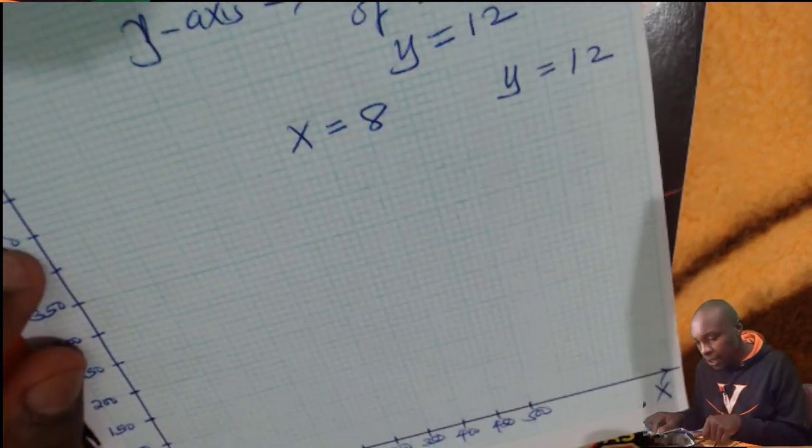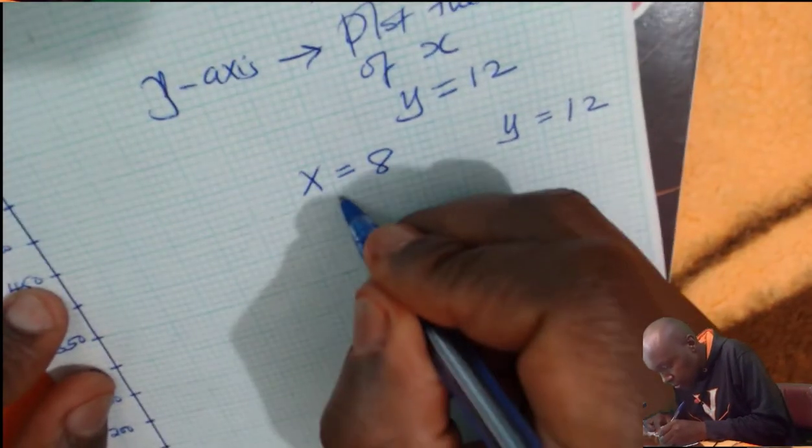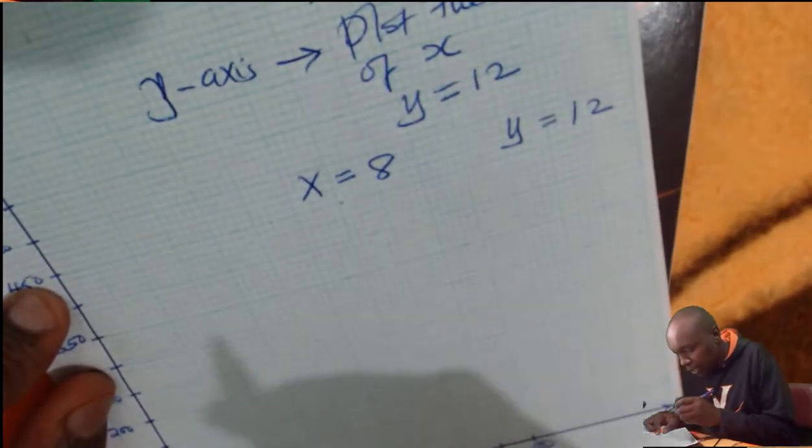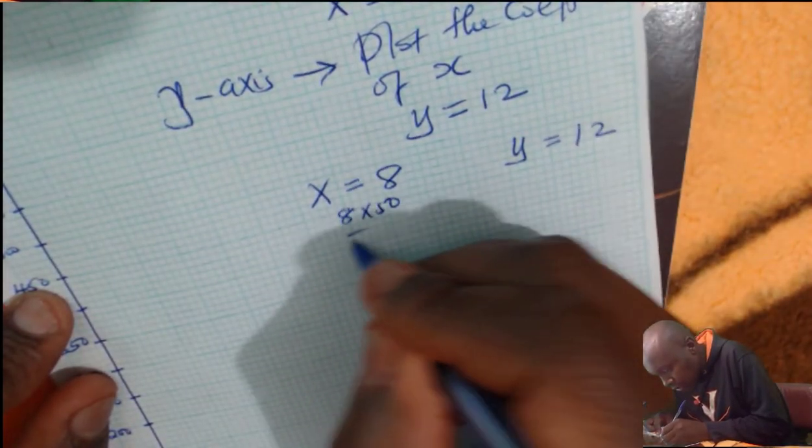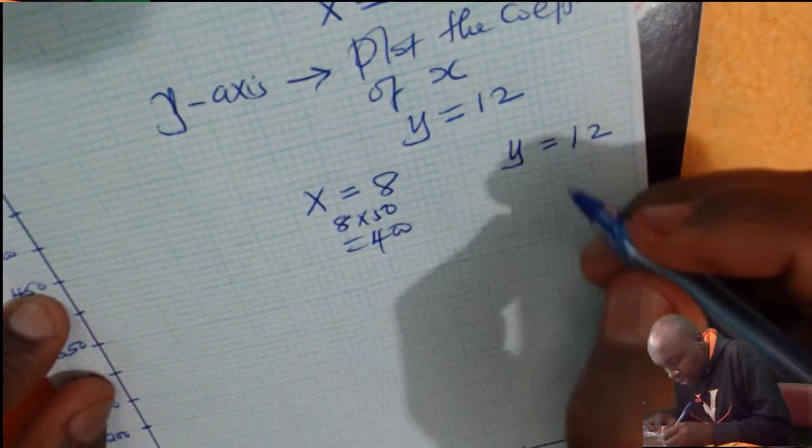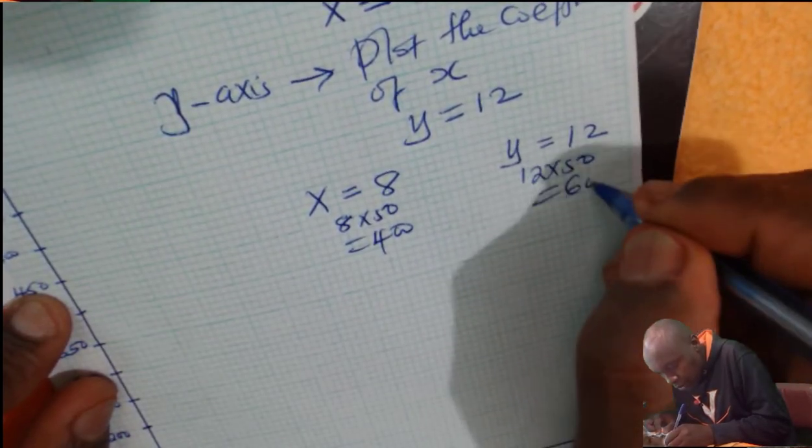you multiply both the x coordinates. So here, you're going to multiply by 50. You multiply 8 multiply by 50. So 8 multiply by 50, this will give 400. Then y multiply by 50, which is 12 multiply by 50. This will give 600.